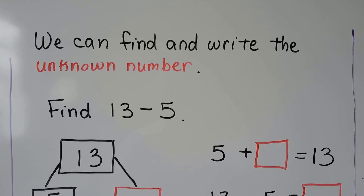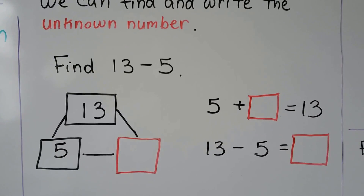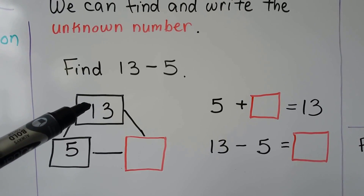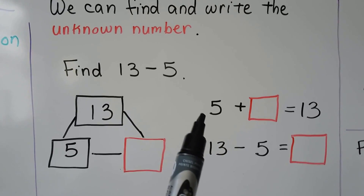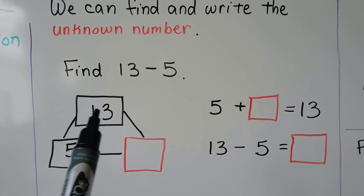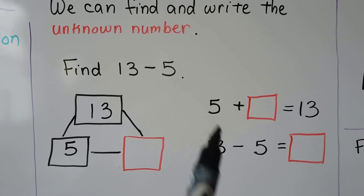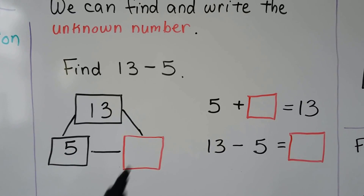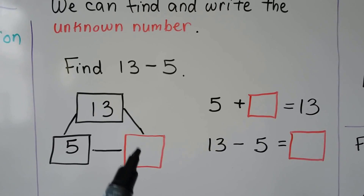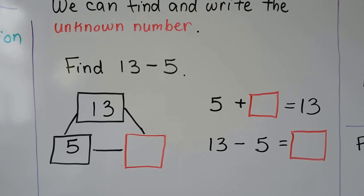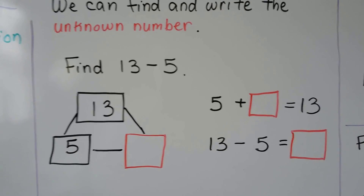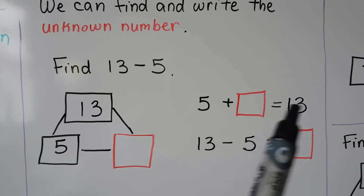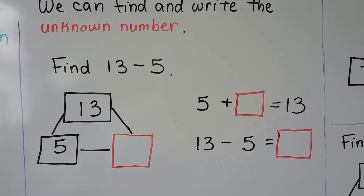Find 13 minus 5. We have 13 as the big number. When we use an addition sentence to find 13 minus 5, the number 13 is going to be the sum. 5 plus some number is going to equal 13. Do you know what the answer is?